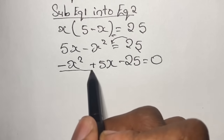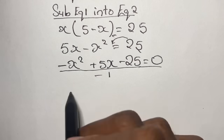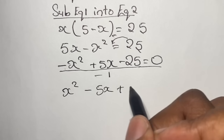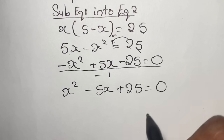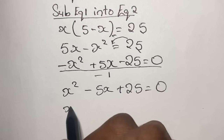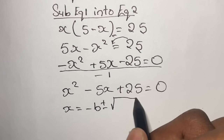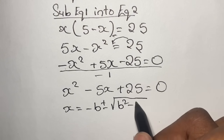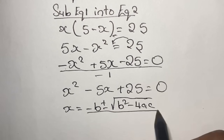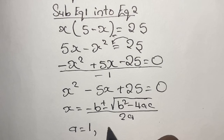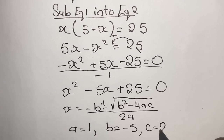Here we have what we call a quadratic equation with values of a, b, and c. Since the value of a cannot be negative 1, we divide the entire equation by negative 1, giving us x squared minus 5x plus 25 equals zero. In this equation, a is the coefficient of x squared which is positive 1, b is negative 5, and c is the number term which is 25.